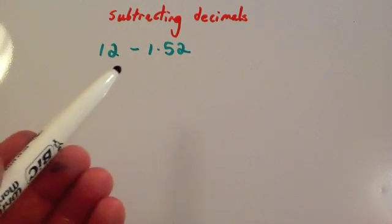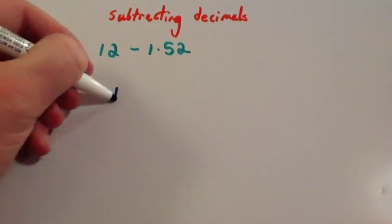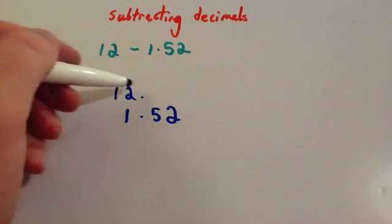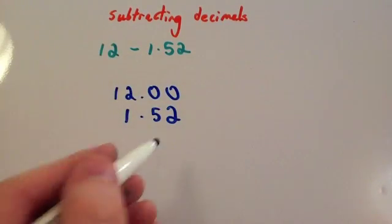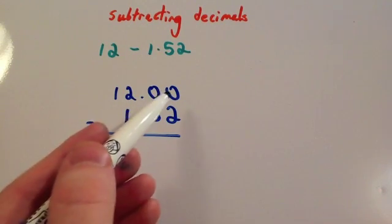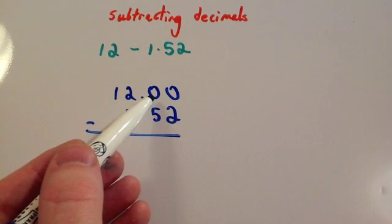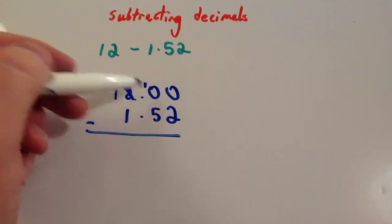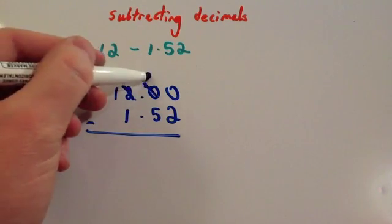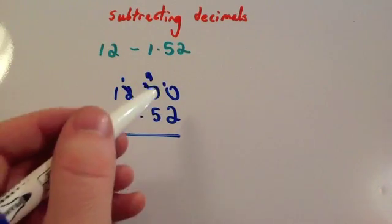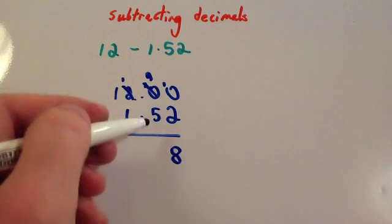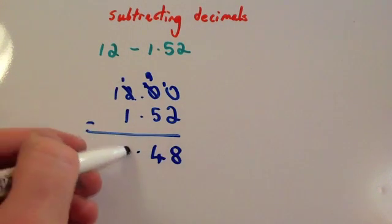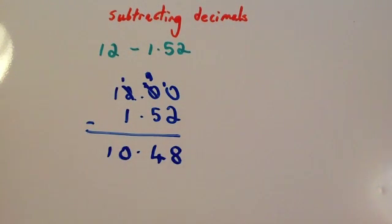This time we're going to do 12 subtract 1.52. Line them up. So 12 and 1.52. Make your 12 the same length. So make it 12.00. That will help with subtraction. Zero take away 2 you can't do. And you can't borrow from here. So what we're going to need to do is borrow from the 2 and make it a 1. And bring the 1 to there. Now that's 10. Now we can borrow from the 10. Make that a 9. And then make that a 10. So 10 subtract 2 is 8. 9 subtract 5 is 4. Make sure we put the decimal point in the right place. 1 subtract 1 is 0. And then you've got your 1. So that would be 10.48.